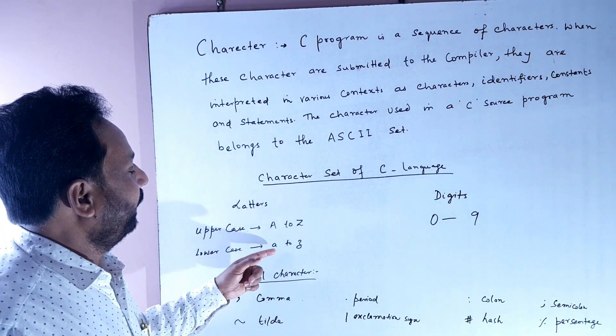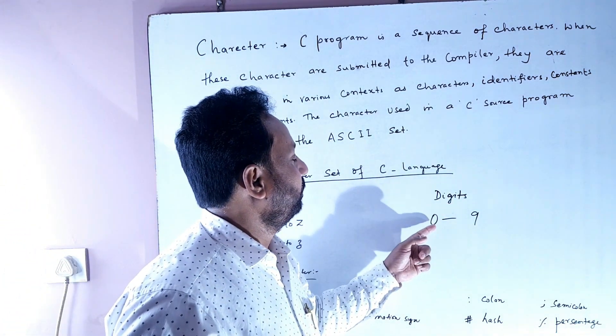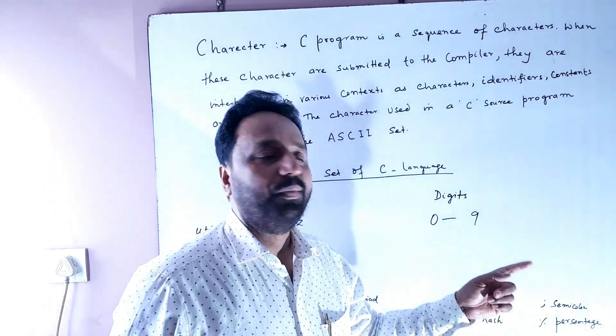Lowercase letters are a to z, written in small letters. Digits range from 0 to 9.